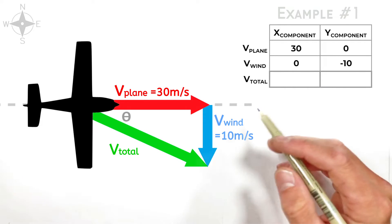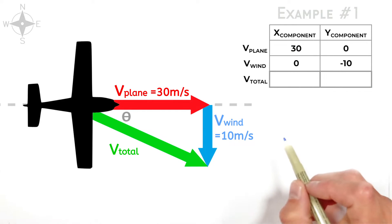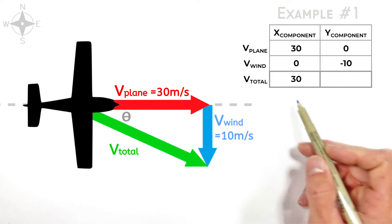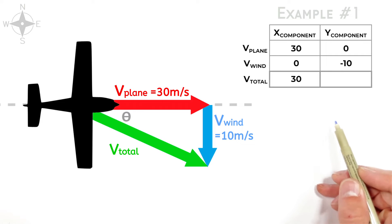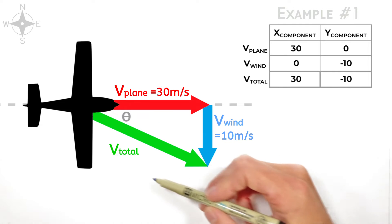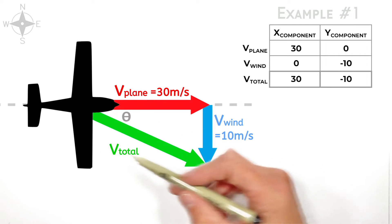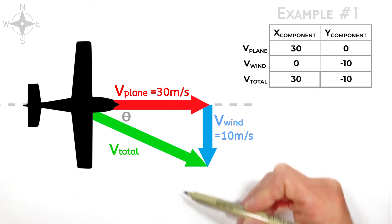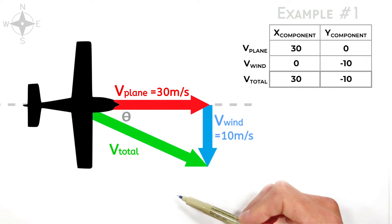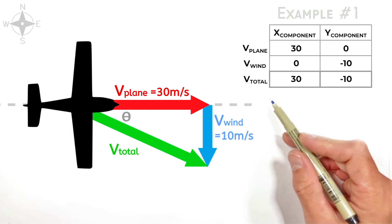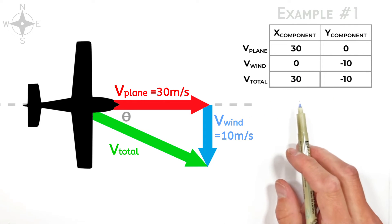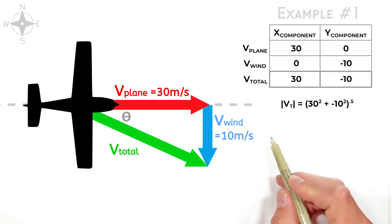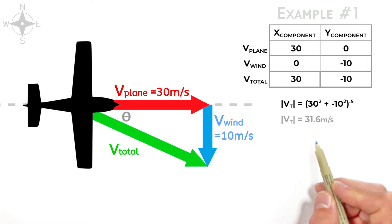To find the vector sum, we add together all components within each axis individually — we add up all x components to get the resultant in the x-axis, and all y components to get the resultant in the y-axis. To find the true speed and velocity of the airplane, we need both the magnitude and direction of the resultant vector. These two components are the two sides of a right triangle, where the true speed is the hypotenuse. Using the Pythagorean theorem, the magnitude of our resultant velocity vector is 31.6 meters per second.